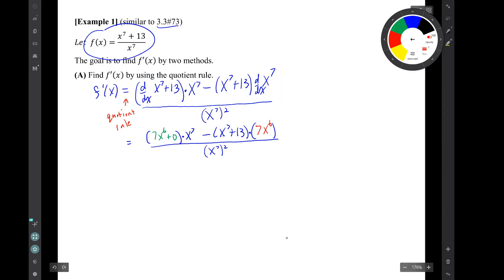Now we have to simplify. So we did a couple of things in this step. We distributed that 7x^6 to both those terms. We kept the minus sign out front, waiting for the next step. And then we dealt with the denominator. x^7 squared means x^7 times 2. In other words, x^14.